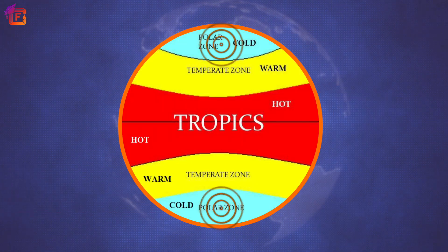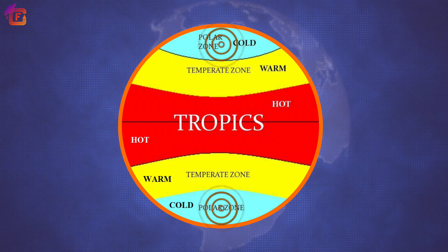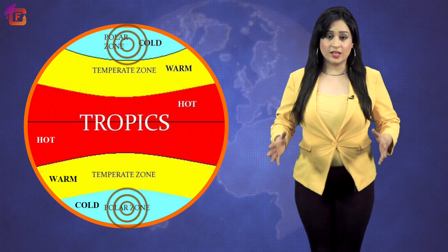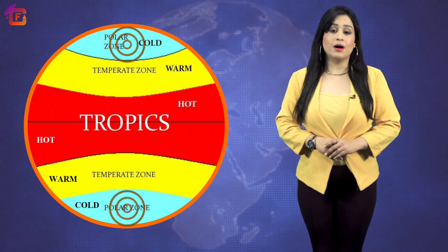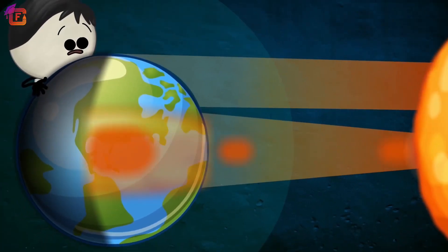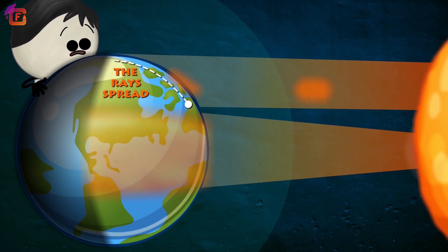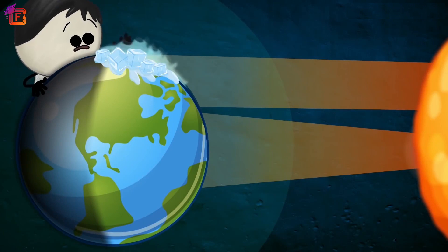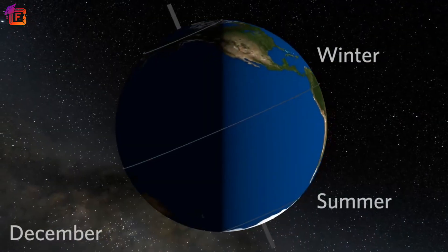The frigid zone lies beyond the Arctic and the Antarctic Circles. They are the coldest zones of the Earth. In these two zones, the sun never rises above the horizon. The polar regions receive minimum solar energy. The frigid zones are the coldest regions on the Earth and are generally covered in ice and snow.